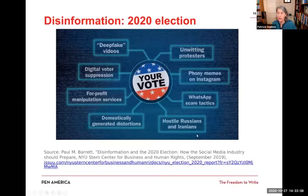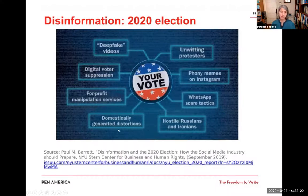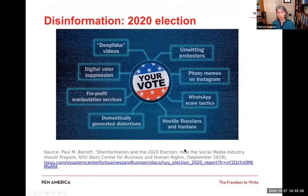These are examples of types of disinformation that could occur as part of our election cycle, including things like deep fake videos, phony memes on Instagram, domestically generated distortions, and digital voter suppression. This report was published a year ago and was directed at how the social media industry should prepare for these types of disinformation attacks.